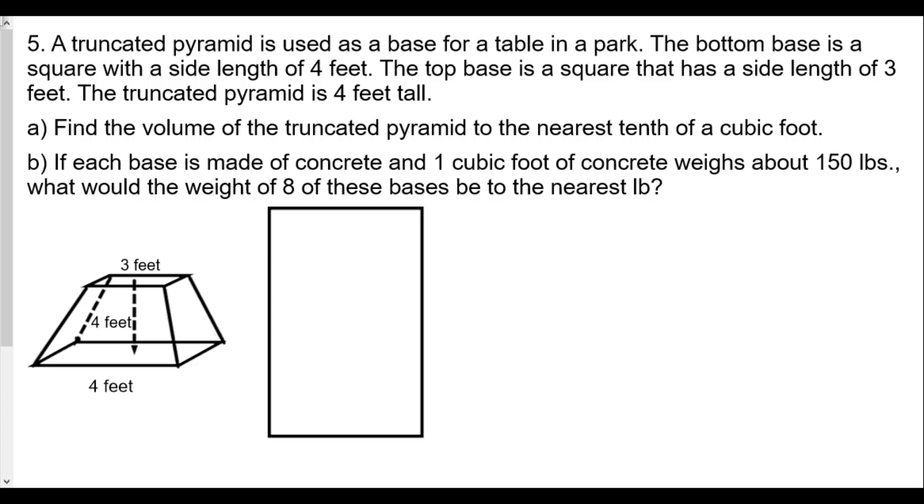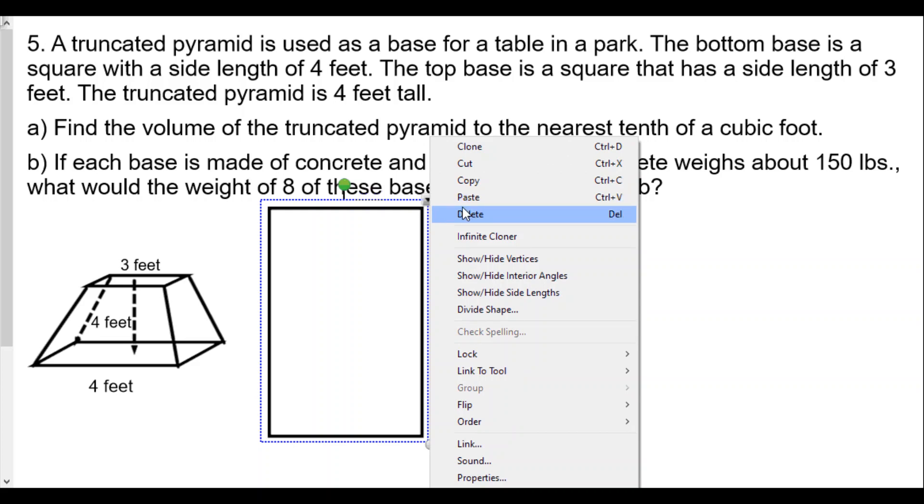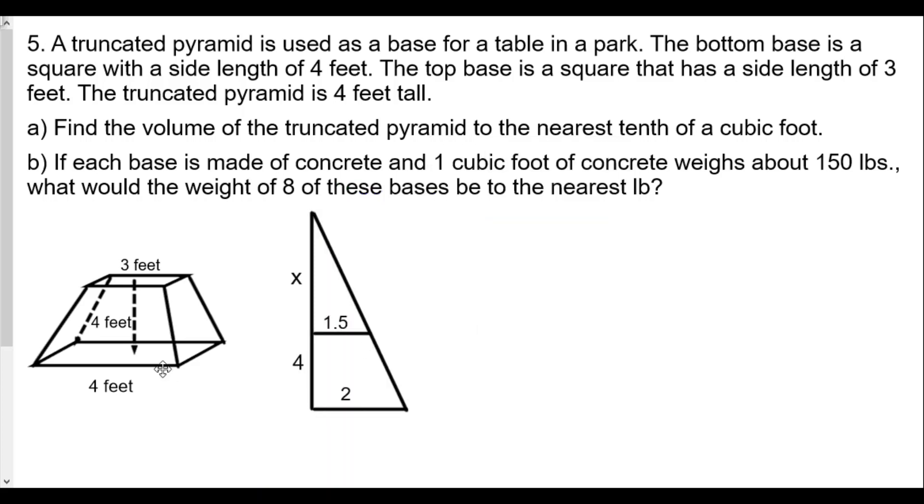Very similar to before, we want to create similar triangle situations. I'm going to bypass making the full pyramid and just make our similar right triangles by going through the middle. We see here that from the center to the edge of the base is 2, from the center to the edge of the top base is 1.5. We have the bottom part is 4 and the top part is x, an unknown value. This height will be x plus 4. Just like we did for the truncated cone, we're going to find the similar triangle situation and create a proportion for the truncated pyramid.